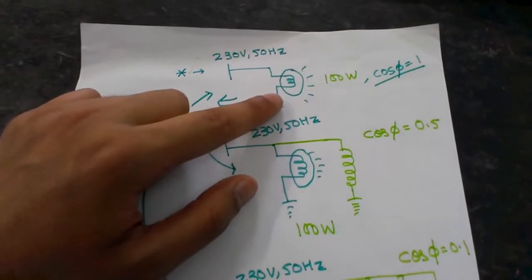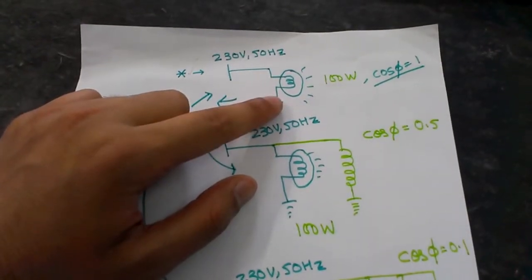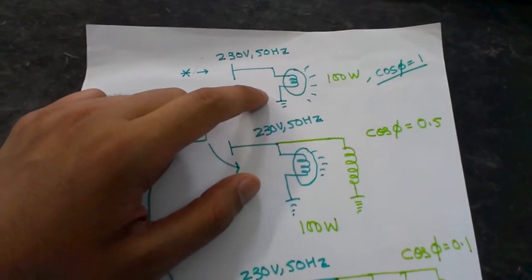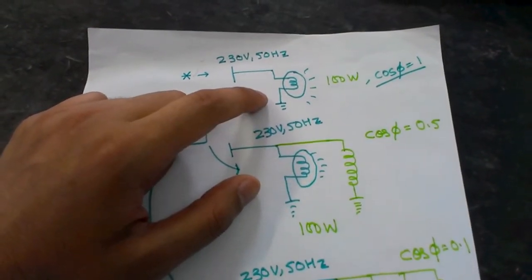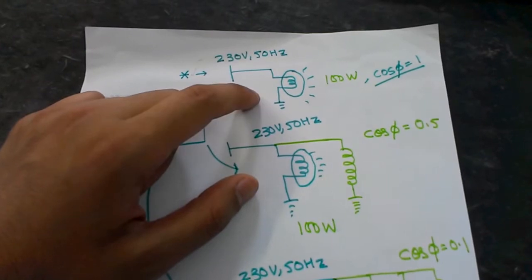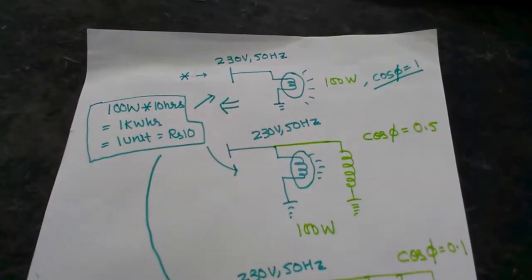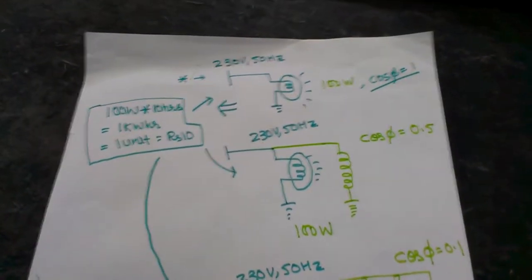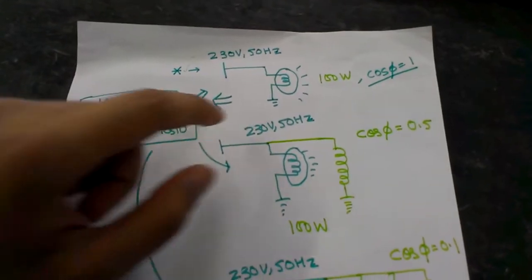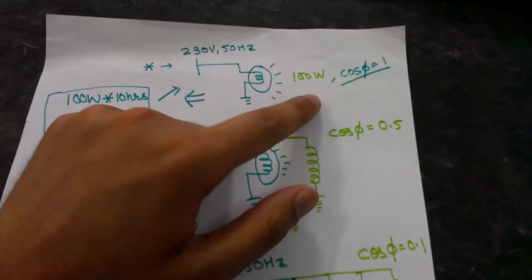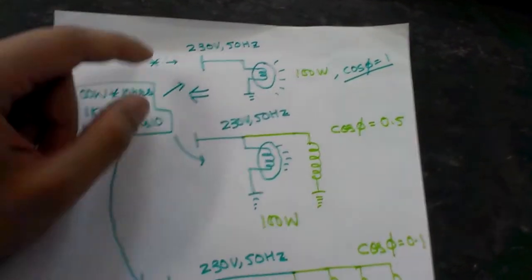Let's say you have an incandescent bulb, which is a purely resistive load because it is just made up of a tungsten filament. Here you will have a power factor of one.